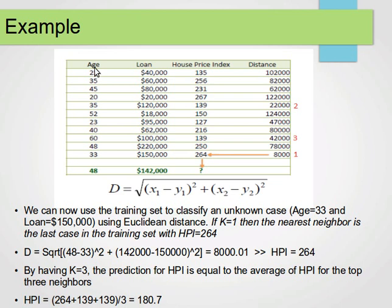Let's say we have this dataset that contains two variables or two features and the value that we are trying to predict. The two features are age and loan and the value we are trying to predict is the house price index. So we have these instances and then we have a new point. Age is 48, loan is $142,000 and we are trying to predict the house price index using the k-nearest neighbor.